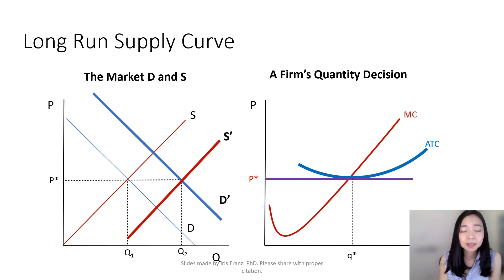When there is lower demand, then the market quantity will be at Q1. But either way, in the long run, the firms will be making zero economic profit. So you can see, price remains at P star.